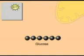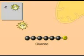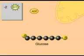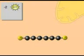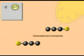In the energy investment phase, some ATP energy is used to start the process of glucose oxidation. By the end of this phase, a six-carbon molecule, glucose, has been split into two three-carbon molecules of glyceraldehyde phosphate.